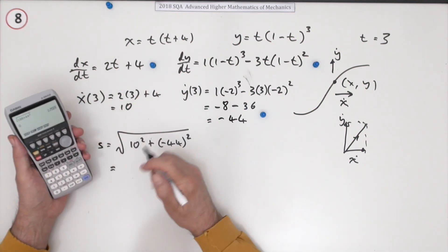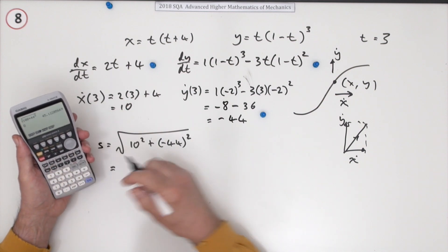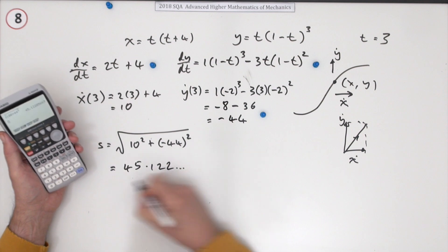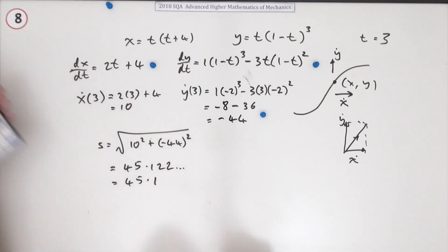Which you could write as a surd, 2 root 509, but you're probably just going to change that to 45.122 etc., so 45.1 for the last mark.